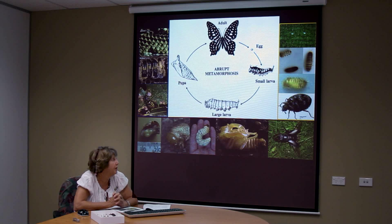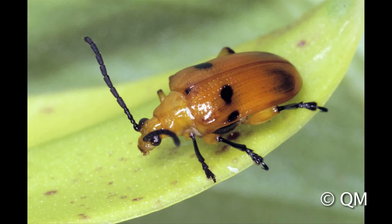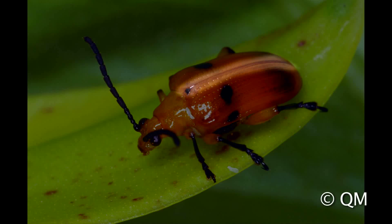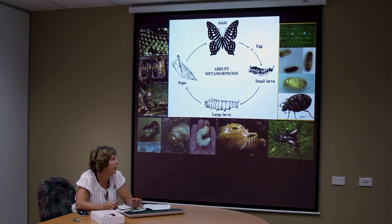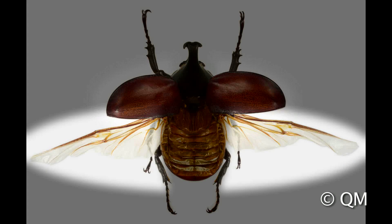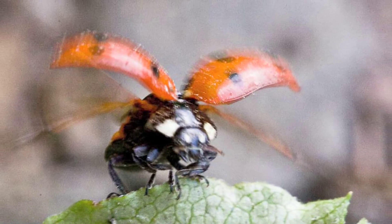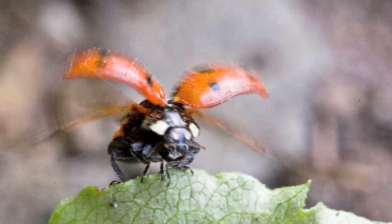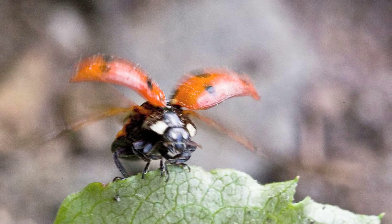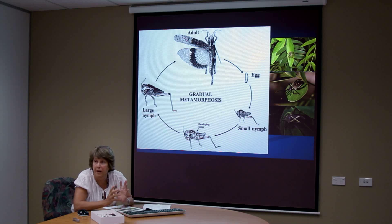Beetles can be recognised because they have a straight line down the middle of the back, as you see here. What beetles have done is their front wings have become extremely hard and they cover the abdomen, with the hind wings folded up underneath. Until they want to fly, they raise those front hard covers that we call elytra, unfold the hind wings, and then fly only with the hind wings.